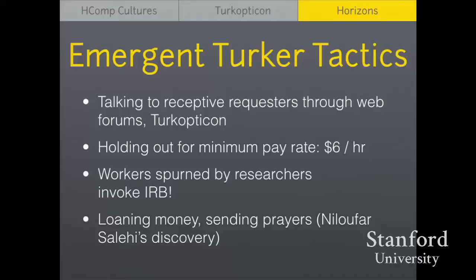There are also emergent Turkopticon tactics from workers talking in these forums. More receptive requesters will come to forums and ask why no one is doing their task, or why they're getting such poor reviews and how to fix it. These forums make possible negotiation at a larger scale than email for requesters who actually want to be fair. Anecdotally, I've heard workers talk about holding out for a minimum pay rate of six dollars an hour, coming out of conversations in these forums — but it's hard to enforce because it's hard to have a boycott when a lot of workers desperately need the money. It's an emergent tactic, and it'll be interesting to see what happens.